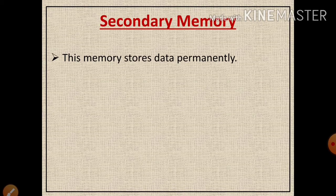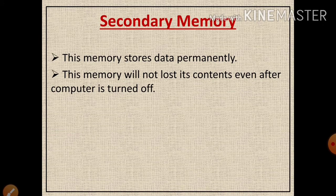Secondary memory is the memory where data is stored permanently. This memory is a permanent memory, as the content on this memory is not lost even after the computer is turned off.